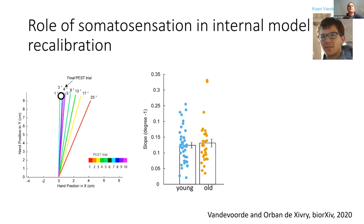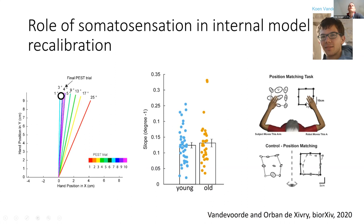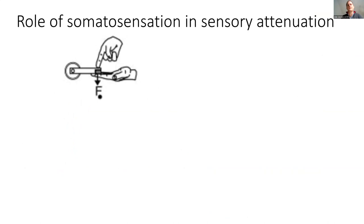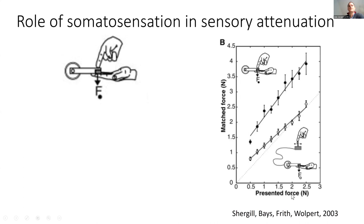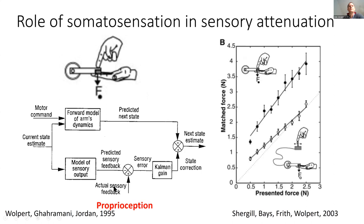We also tested other somatosensory function tasks — for instance, a position matching task, where the robot moves one hand and you have to move your other hand to match. There was also no link there. We had another task called the sensory attenuation task, where you receive a force on your left hand and then reproduce this force by pushing with your right hand on your left finger. When people reproduce a force of two Newtons, they actually push 3.5 Newtons. This is not because they can't feel the force — when they reproduce it indirectly, they do that properly. This arises from a model where proprioception is, in a Bayesian way, merged with prediction from the internal model, yielding this overcompensation. The idea is that if proprioception were worse, you would rely more on prediction and have even more overcompensation.